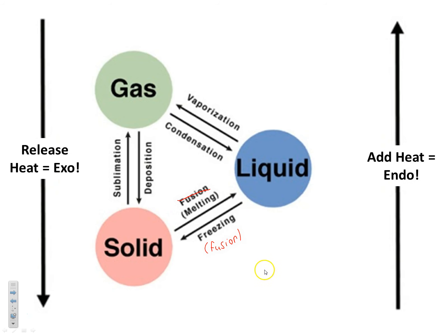A couple of other things to remember: if you're adding heat, it's endothermic — going solid to liquid to gas. If you're going in the other direction — gas, liquid, solid — we're removing heat, giving off heat, it's exothermic. And if you go directly from a gas to a solid, that would also be exothermic.